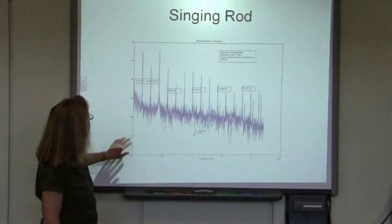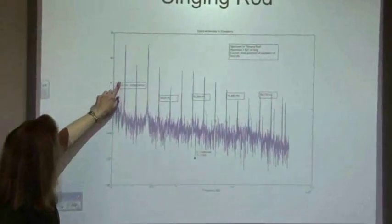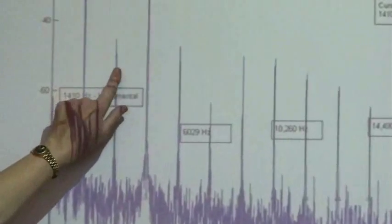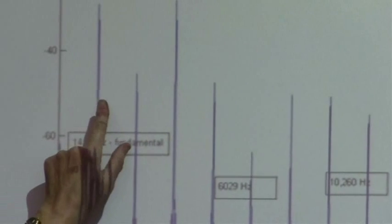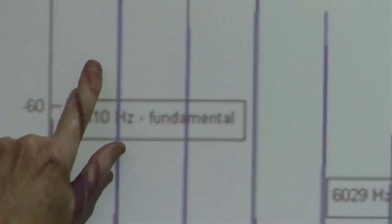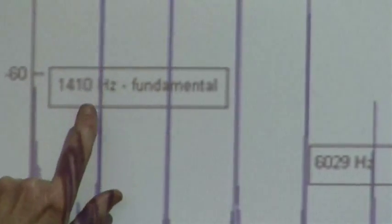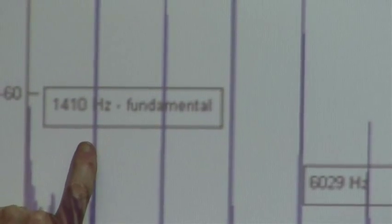And on this graph, I'm sure you can't see the numbers here, but you can see a series of very strong peaks. And these are the different frequencies, the allowed frequencies, which the rod can support.